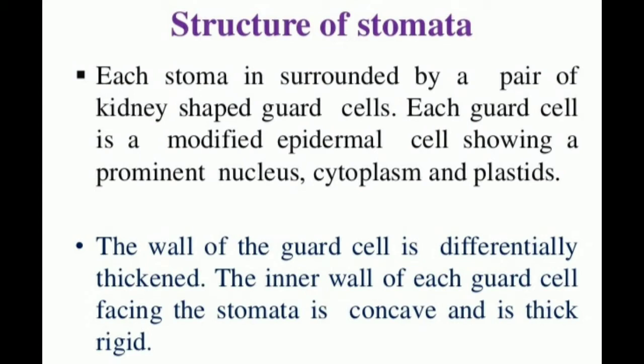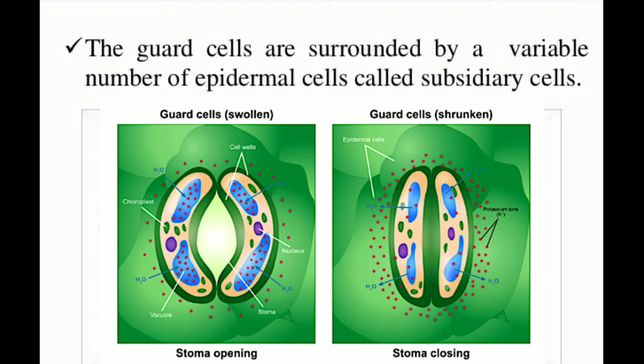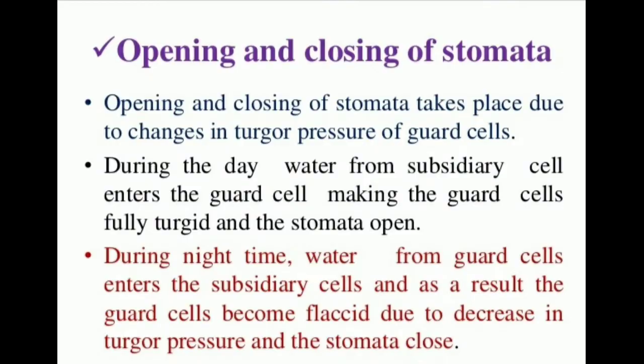Each stoma is surrounded by a pair of kidney-shaped guard cells. Each guard cell is a modified epidermal cell showing a prominent nucleus, cytoplasm, and plastids. The wall of the guard cell is differentially thickened — the inner wall of each guard cell facing the stomata is concave and thick-rigid. The guard cells are surrounded by a variable number of epidermal cells called subsidiary cells.